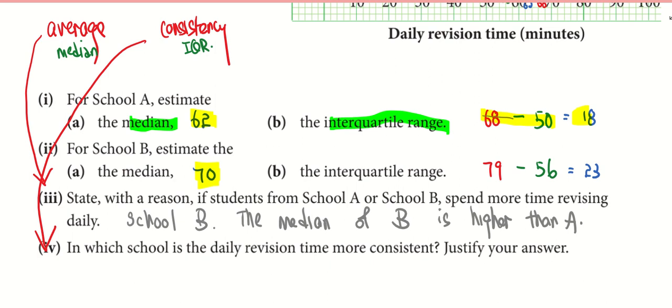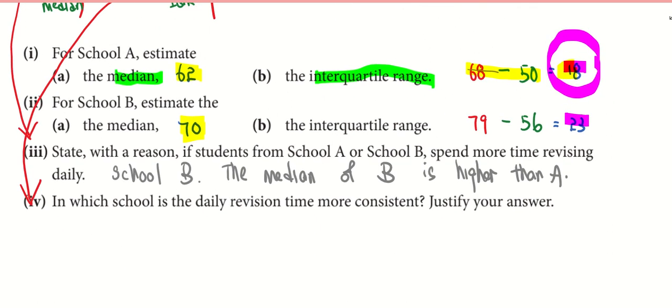In the second part, I want to look at the interquartile range. If I look at the interquartile range, I want it to be small. The smaller, the better - you are closer to one another. So in this case, School A. Why? The interquartile range of A is less than B. So in this case, School A is more consistent.